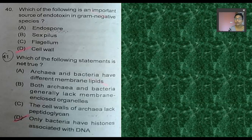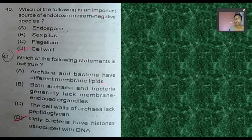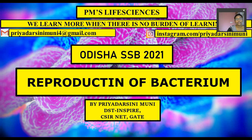In 2018, question 14 asked: which of the following is an important source of endotoxin in gram-negative species? We have already discussed that lipopolysaccharide is part of the endotoxin, which is a cellular part of gram-negative bacteria. The correct answer is D — lipopolysaccharide as a cellular component.